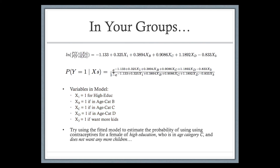We're going to use this model to estimate the probability of using contraceptives for a female who has high education, is in age category c, and does not want any more children. To do that, use the expression of the model on the scale of probability. I'd suggest pausing the video and trying to work through this on your own before looking at the answer.